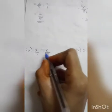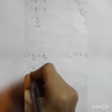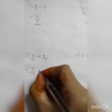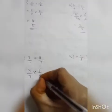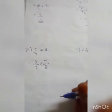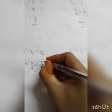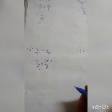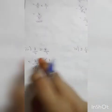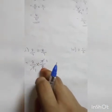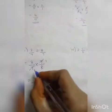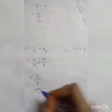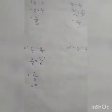Third question: 3/7 divided by 8/7. Division becomes multiplication, 8/7 becomes 7/8. We can cancel the 7s: 7 divided by 7 is 1. So 3 into 1 is 3, 1 into 8 is 8. The answer is 3/8, which is a proper fraction — write the answer as such.